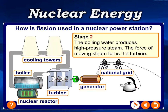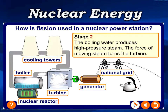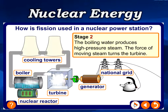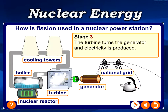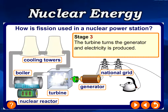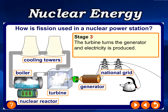The steam produced moves the turbines, and the turbines drive a generator, converting kinetic energy into electrical energy. This electricity is then distributed through national grids to houses and other users.